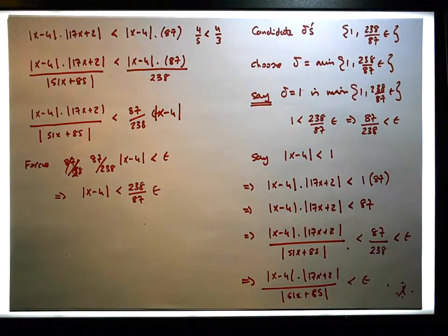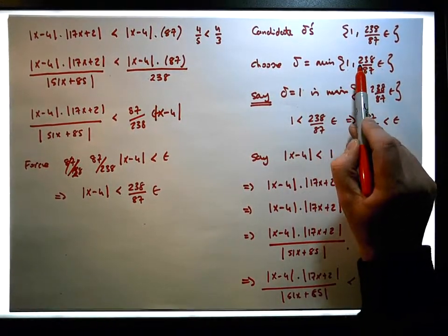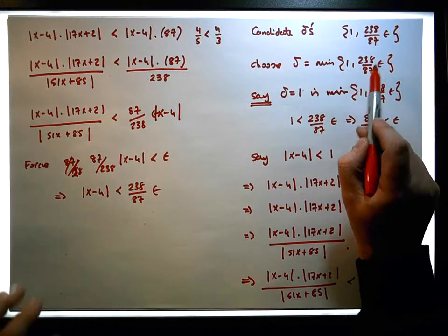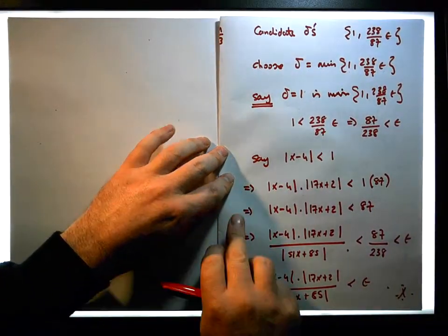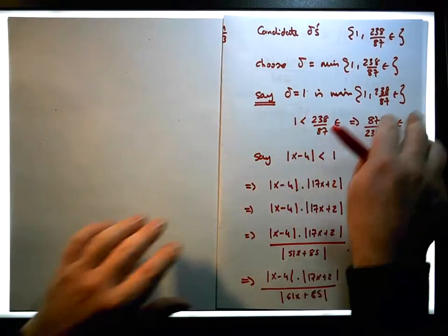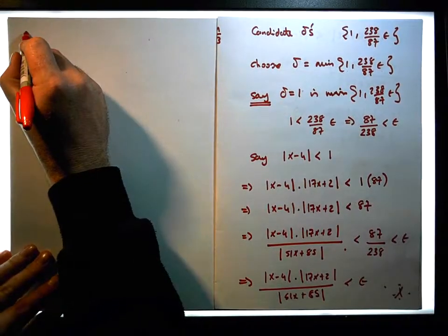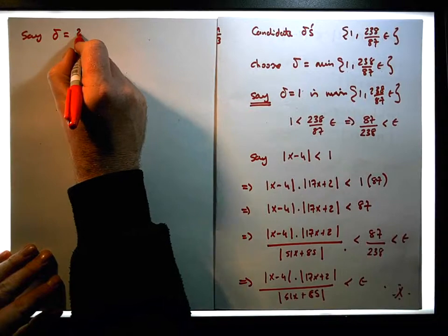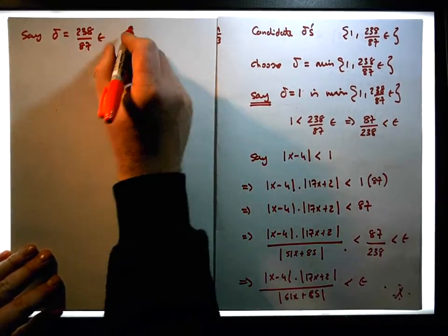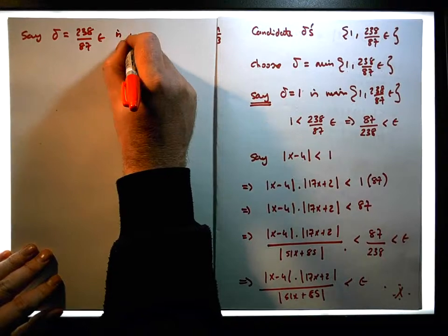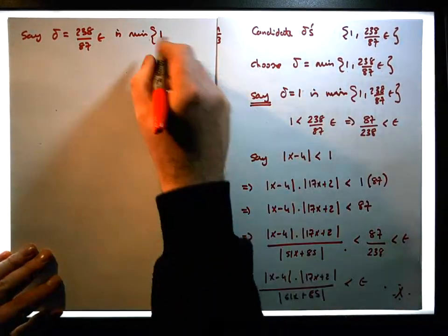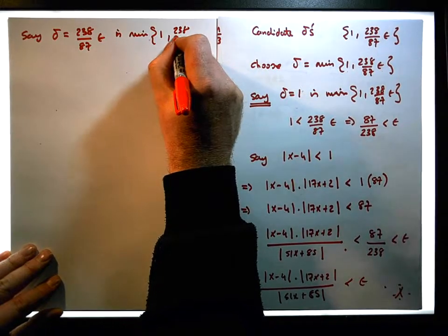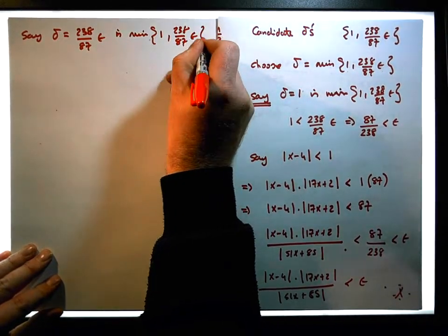Now we still have another choice of delta. Say if 1 wasn't the minimum — if 248 over 87 epsilon was the minimum instead. So let's choose that. Let's say for argument's sake that delta equals 248 over 87 epsilon, which is the minimum of the choice between 1 and 248 over 87 epsilon.